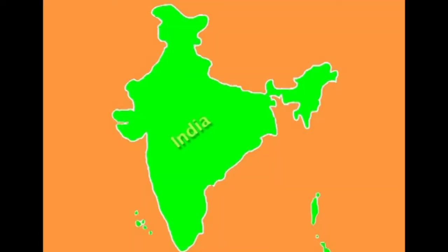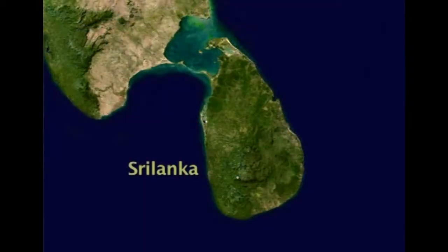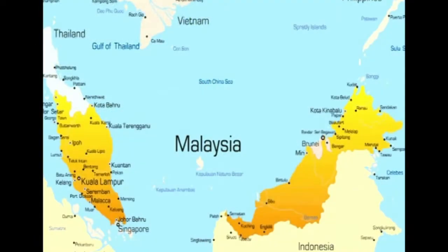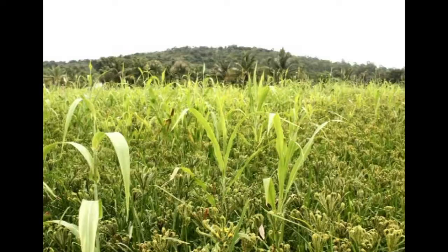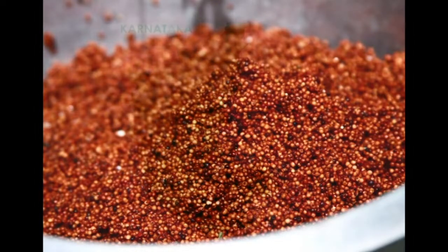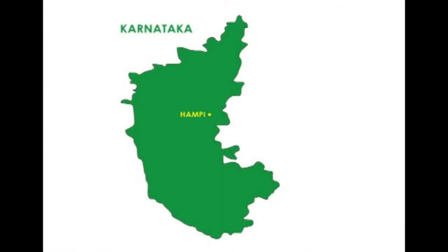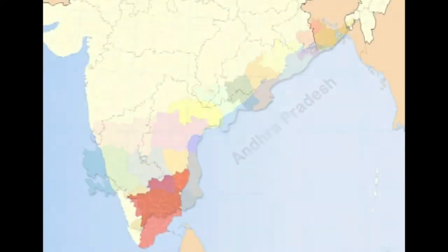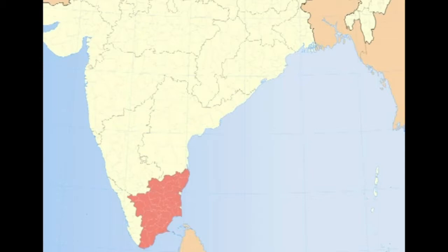These millets are mostly grown in countries like India, China, Sri Lanka and other Asian countries like Malaysia. In India, three types of millets are more popularly consumed. The first is finger millet, which is ragi, and it is grown and eaten very popularly in states such as Karnataka, Andhra Pradesh and Tamil Nadu.